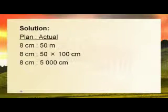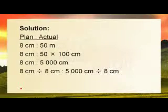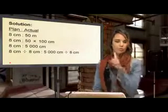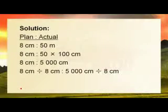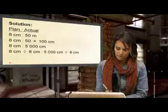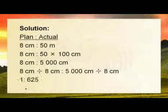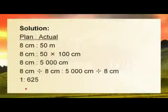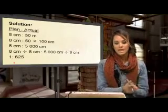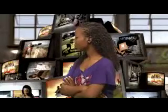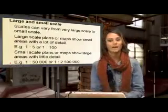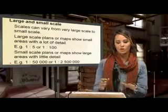Now we can find out what our 1 to something else would be. We divide our eight centimetres by itself so it goes to one — and what we do to one side, we do to the other. So 5,000 divided by eight gives us 1 to 625. What that means is that one centimetre on the map equals 625 centimetres in reality on the ground.